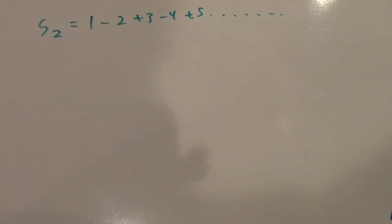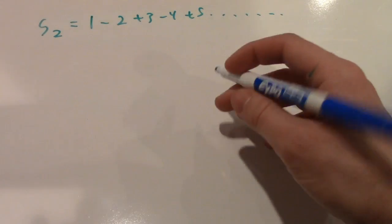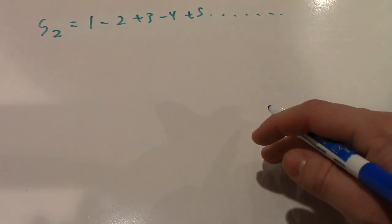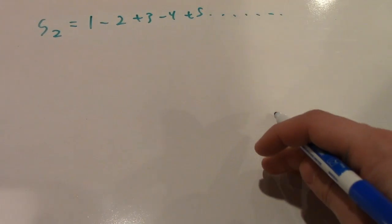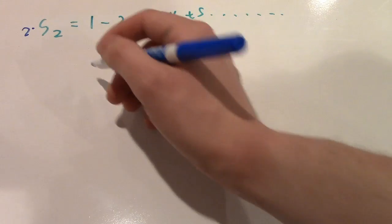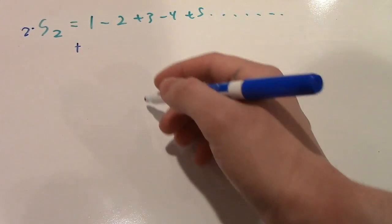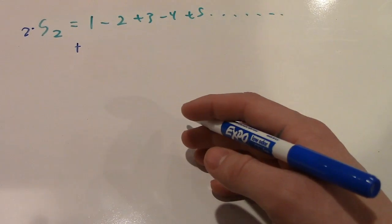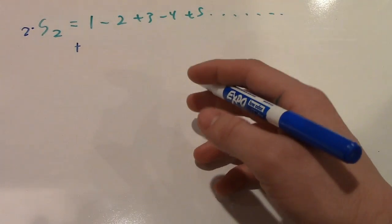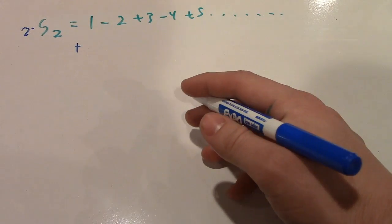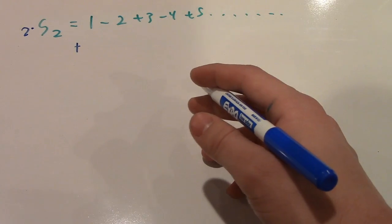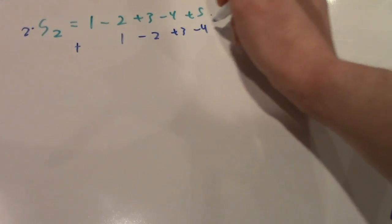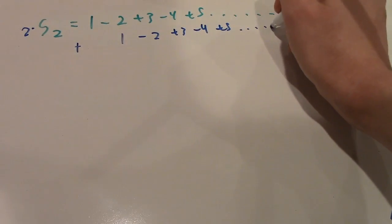Now, what we're going to do is we are going to add our second sum to our second sum. Now, whenever you add something to itself, this is the same as multiplying that thing by 2. That's what we're going to do. Now, when we add our second sum to our second sum, we are going to stagger the second second sum. Hopefully that's not too confusing. Now, this staggering doesn't mean anything mathematically. It just allows you to more easily see what's going on. So, what we're going to do is we now have 1 minus 2 plus 3 minus 4 plus 5, and then so on, continuing on up to infinity.